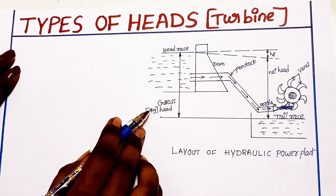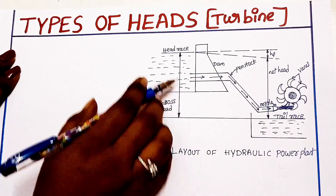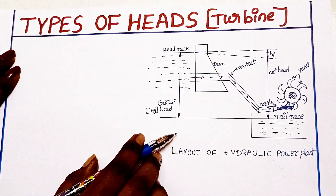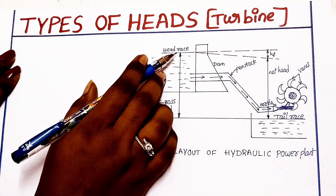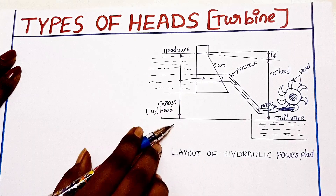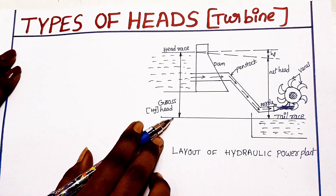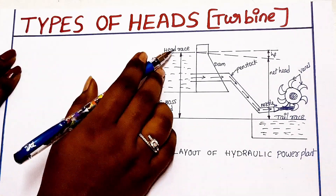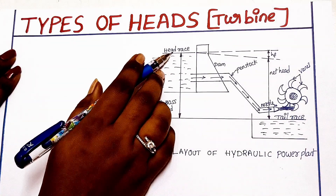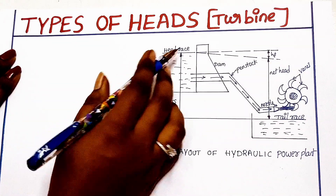The gross head is the total head — it is the total difference in water level between the headrace and the tailrace.